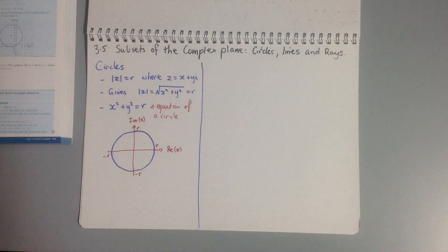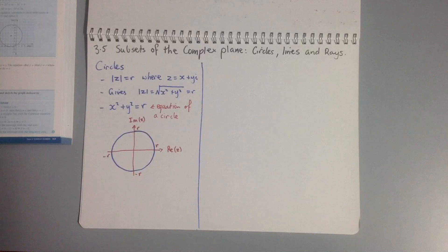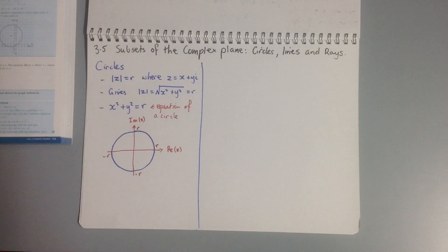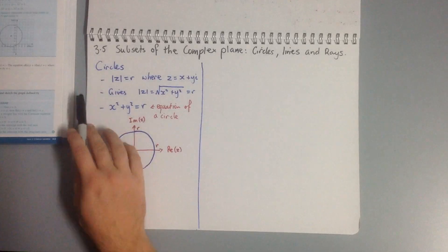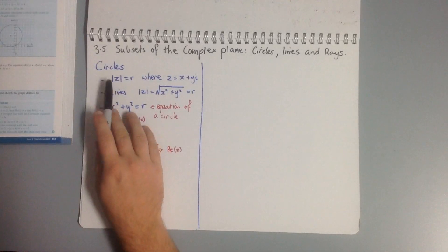In this tutorial we're going to be looking at subsets of the complex plane — circles, lines, and rays. For circles, if we have the equation modulus of z equals r, where z equals x plus yi...